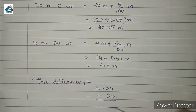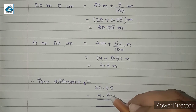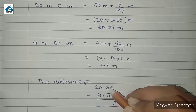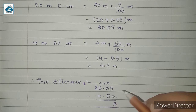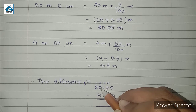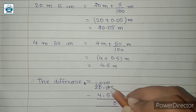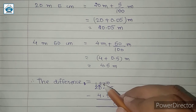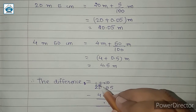So we have 20.05 minus 4.50. Subtracting: 5 minus 0 is 5. Here we have 0 but 5 is greater, so we carry 1 from the next place. We carry 1 from 2, so this becomes 10, and we give 1 over here — regrouping. So we are left with 1. Then 10 minus 1 gives 9. 10 minus 5 is 5. Point as it is. Here is 9.